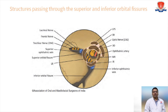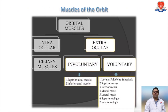Muscles of the orbit are divided into intraocular and extraocular. Intraocular muscles are involuntary. Involuntary muscles include the superior tarsal muscle and inferior tarsal muscle. Voluntary extraocular muscles are: levator palpebrae superioris, superior rectus, inferior rectus, medial rectus, lateral rectus, superior oblique, and inferior oblique.